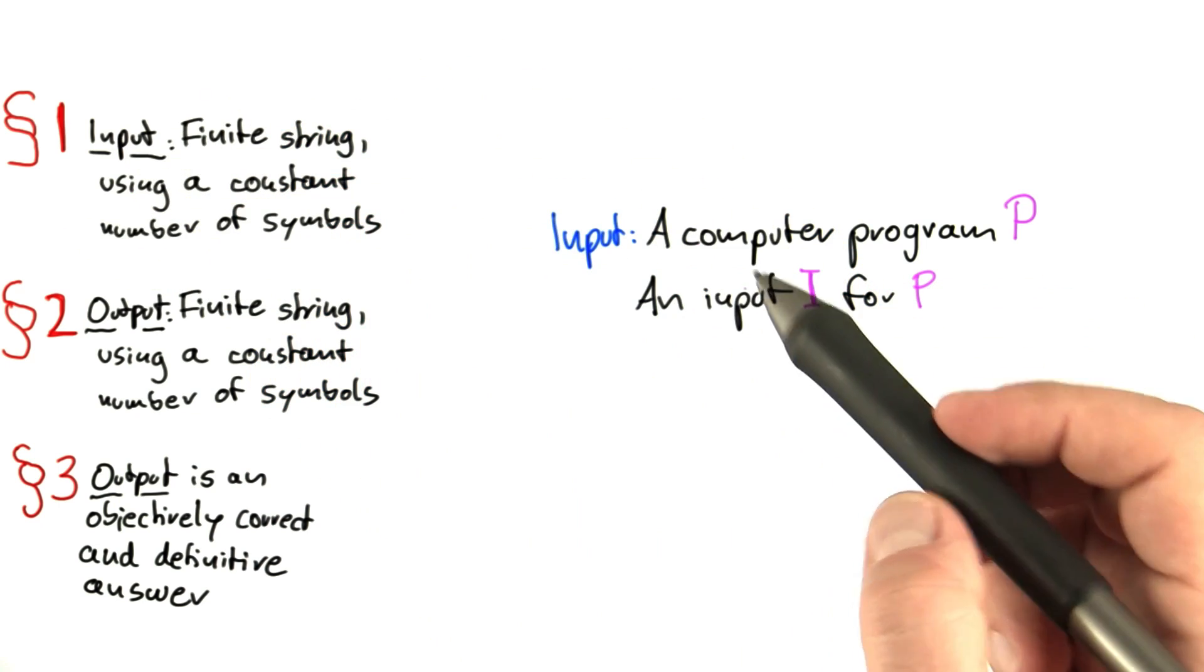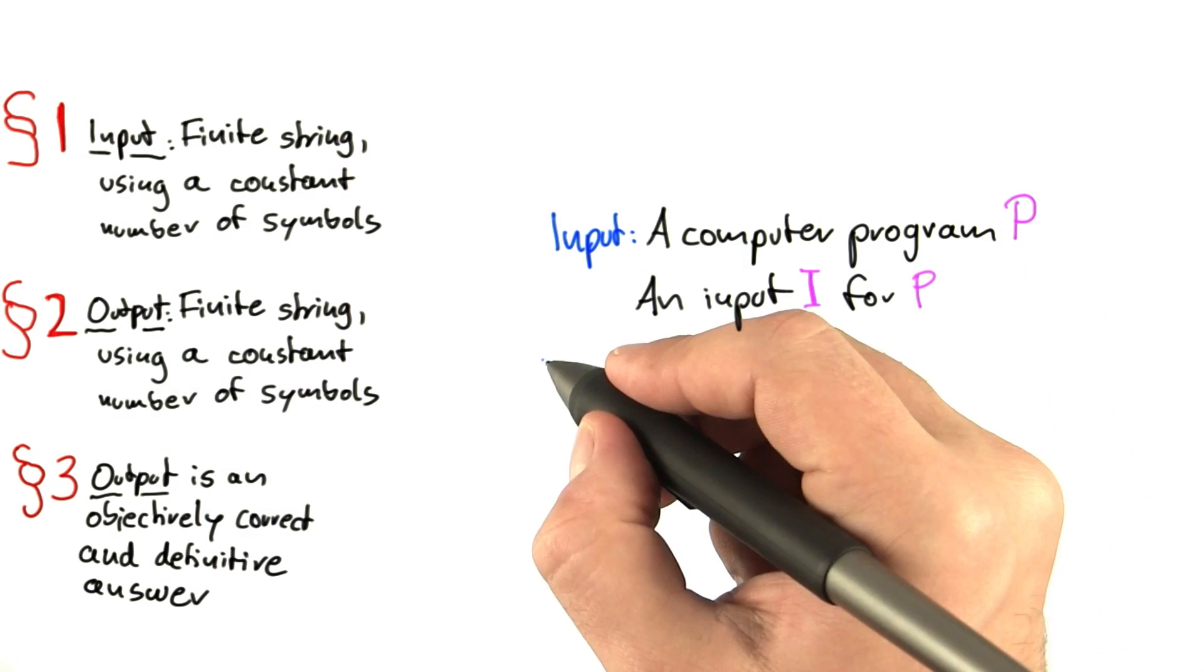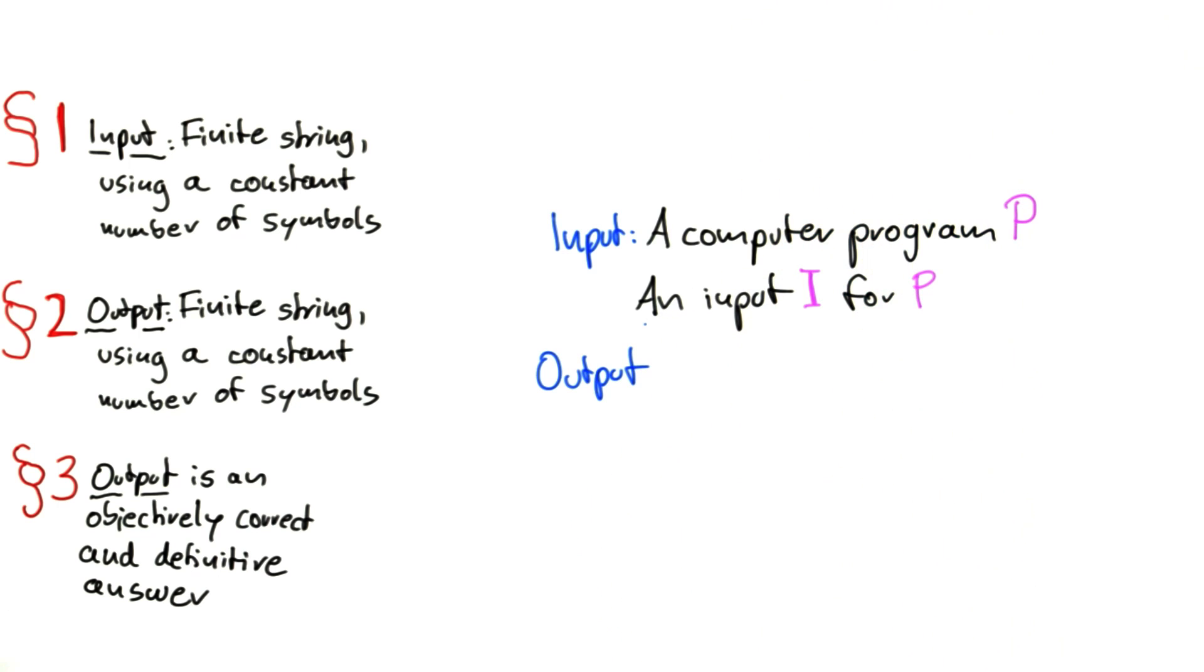And the input, of course, in accordance with rule number one, will be a finite string using a constant number of symbols. And, actually, the program, of course, will be as well. So, it may be, for example, the source code of a program.